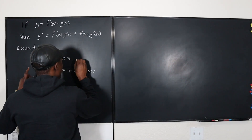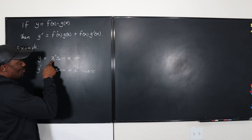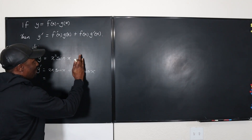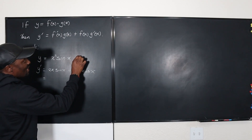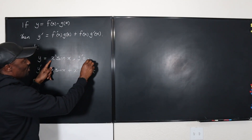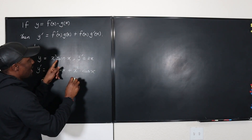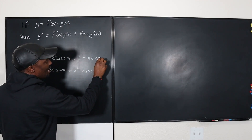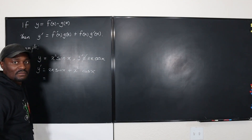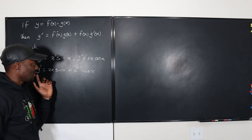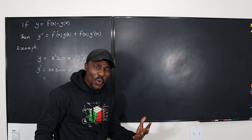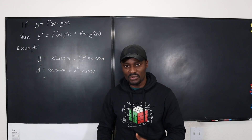You cannot say that the answer is just the product of the individual derivatives. We cannot say that y' is equal to 2x — the derivative of x squared — times cosine x — the derivative of sin x. Nope. We cannot say that. This simpler form is incorrect; the product rule form is more complicated, but it is what is correct.